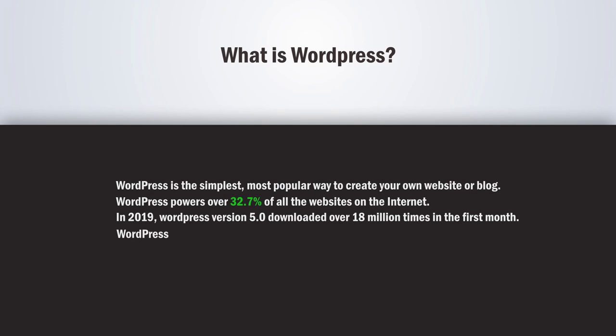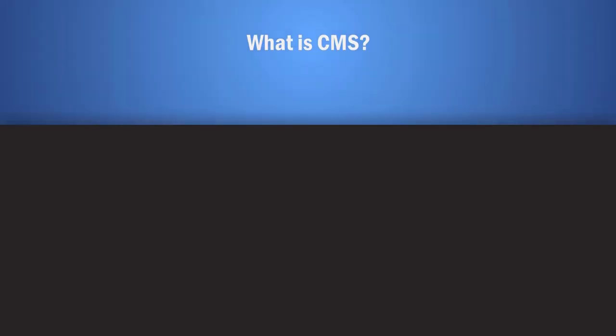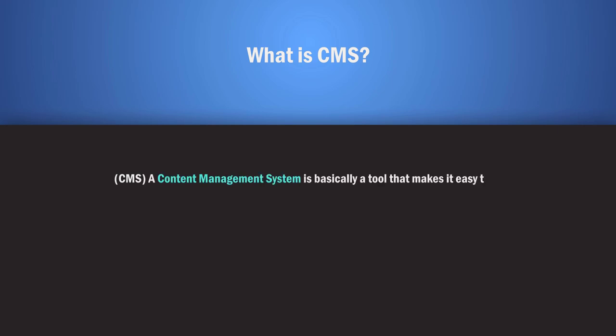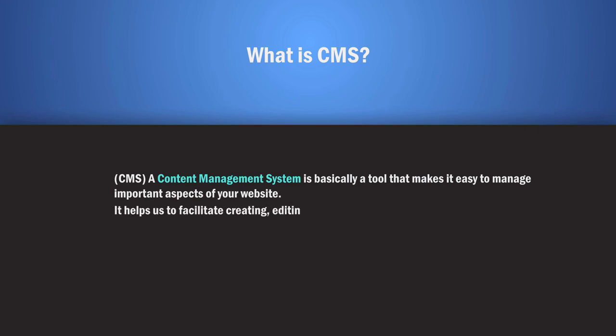Simply put, WordPress is an open-source content management system. Open source means that anyone can use or modify the WordPress software for free. A content management system, or CMS, is a tool that makes it easy to manage important aspects of your website — it helps with creating, updating, organizing, and publishing content. CMS allows you to create and publish content on the web, and we'll use it to create, update, and delete blog posts.